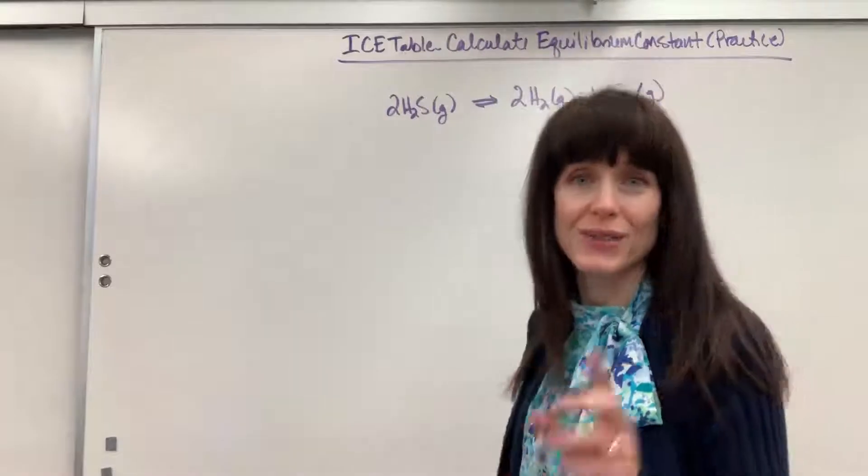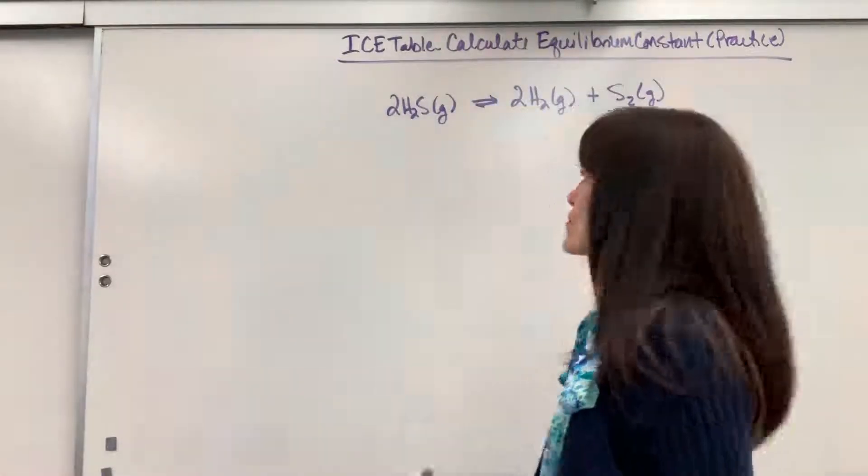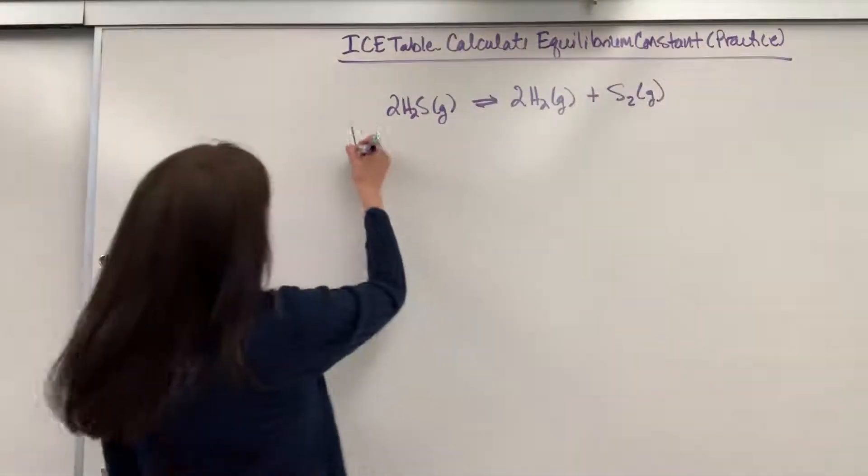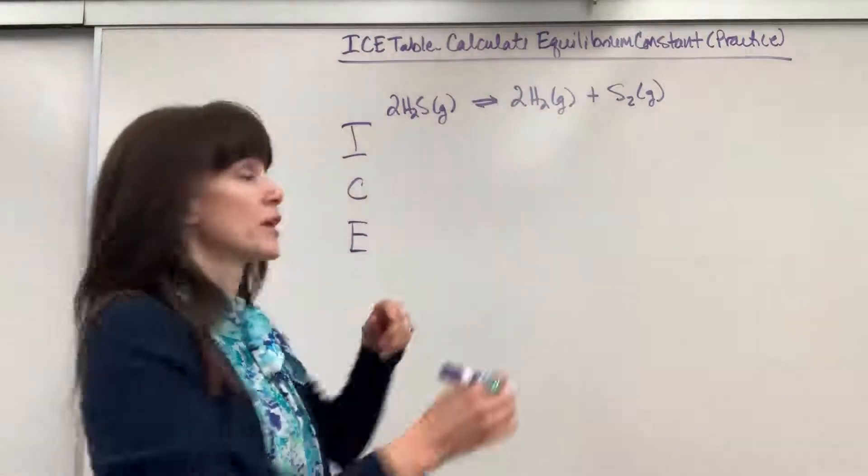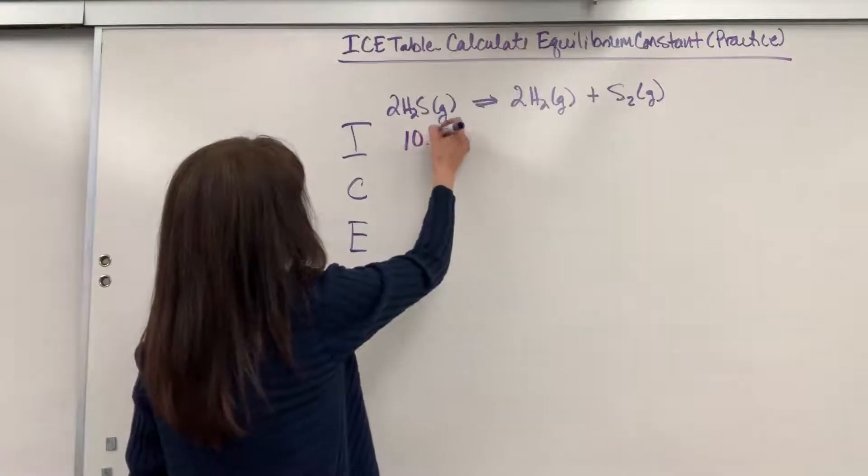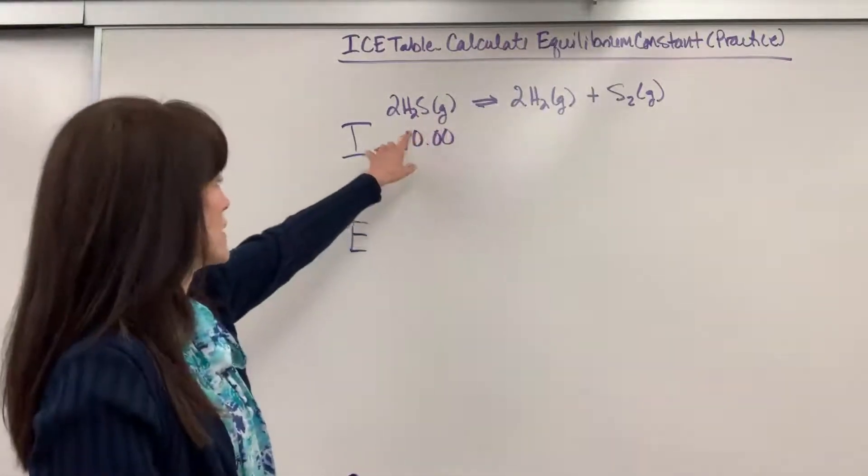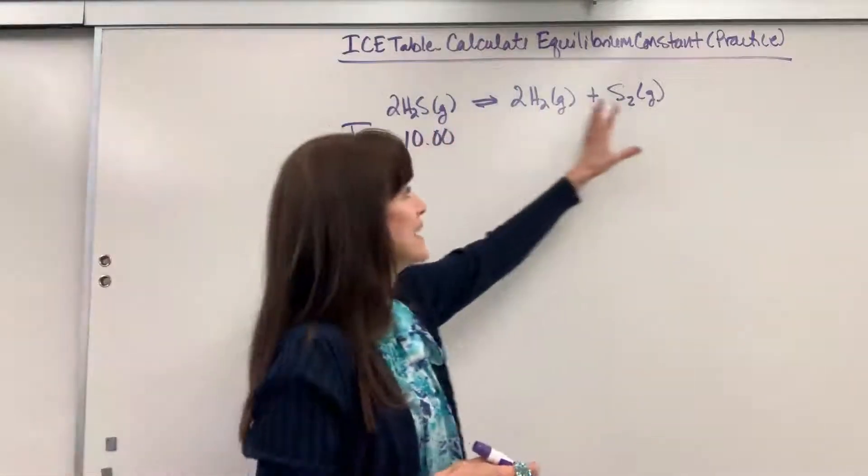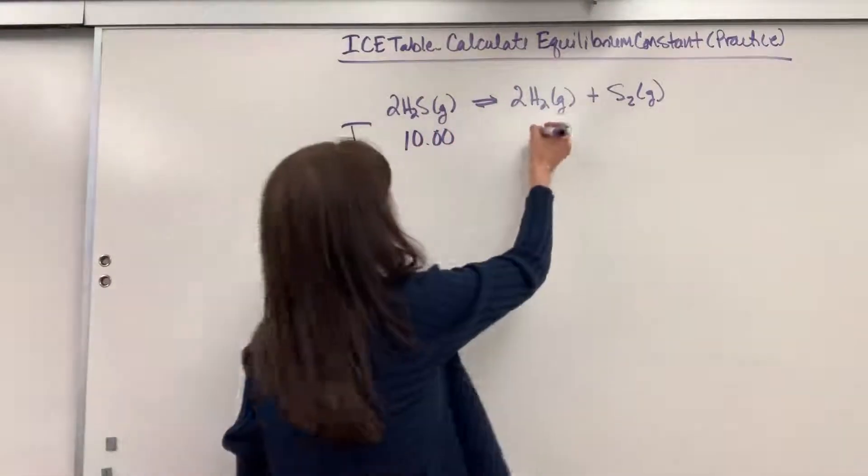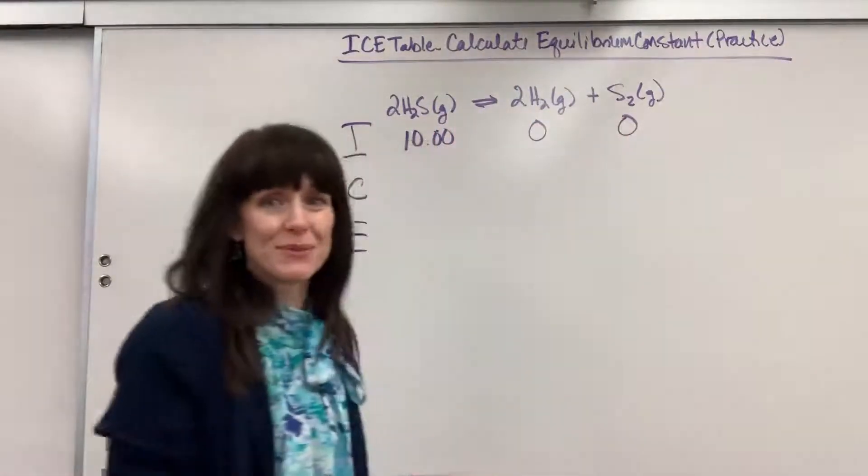When the reaction reaches equilibrium, the partial pressure of the S2 is 0.02 atm. So that's going to be our equilibrium concentration. Let's go ahead and set up the ICE table: initial, change, and equilibrium. So our partial pressure is going to be 10, and that's for the hydrogen gas. So that's what we start with. We don't have anything on the product side yet, so that is where I put my zero.